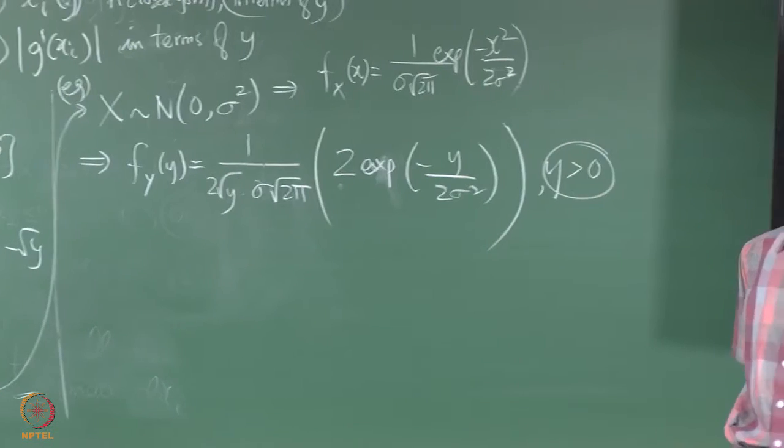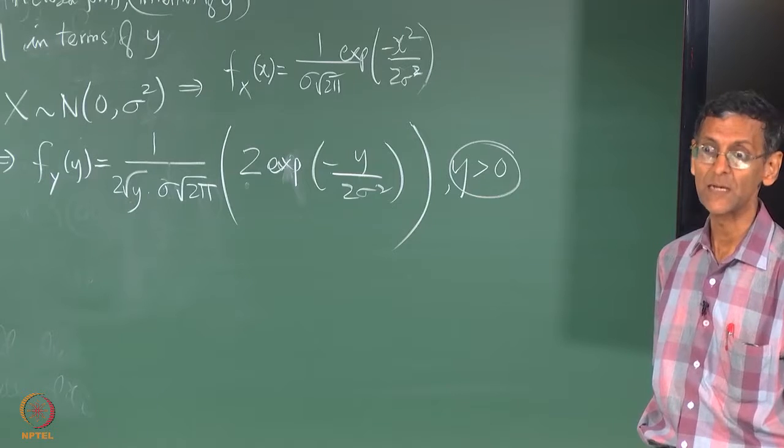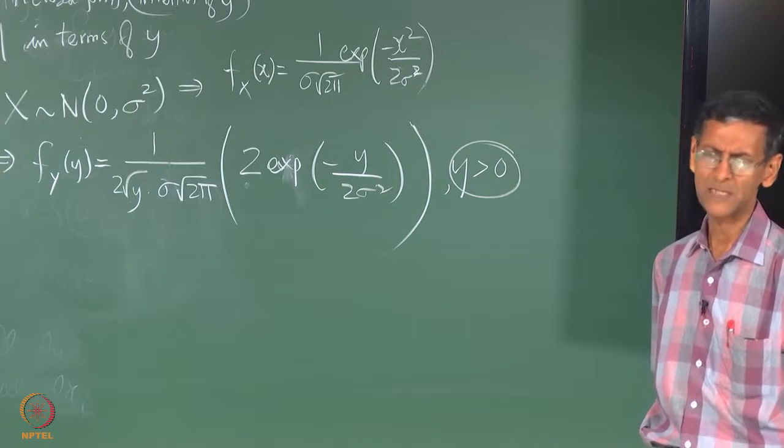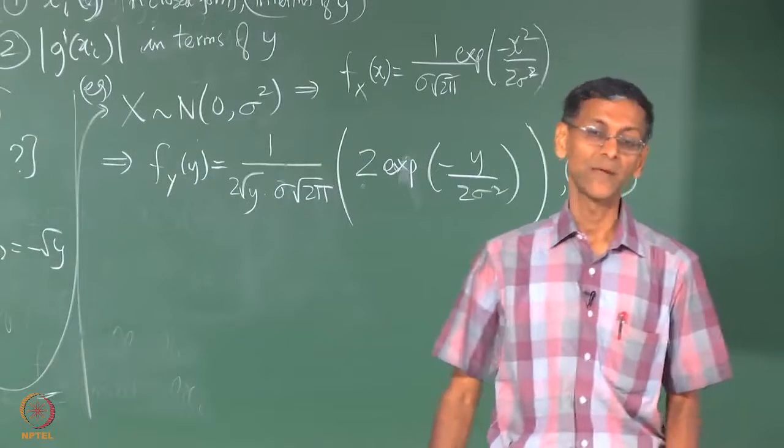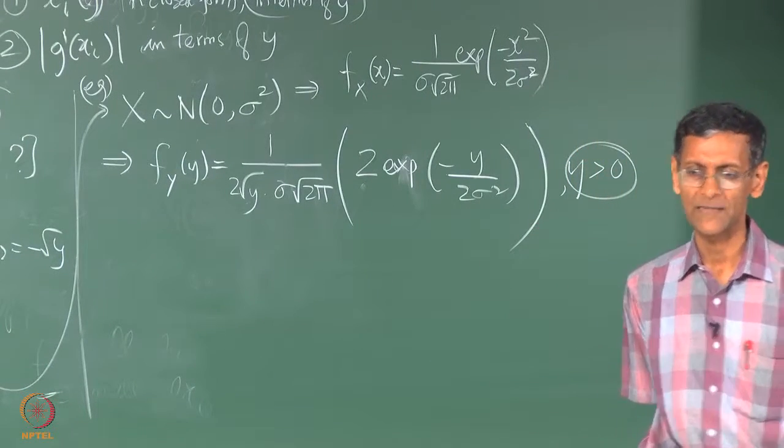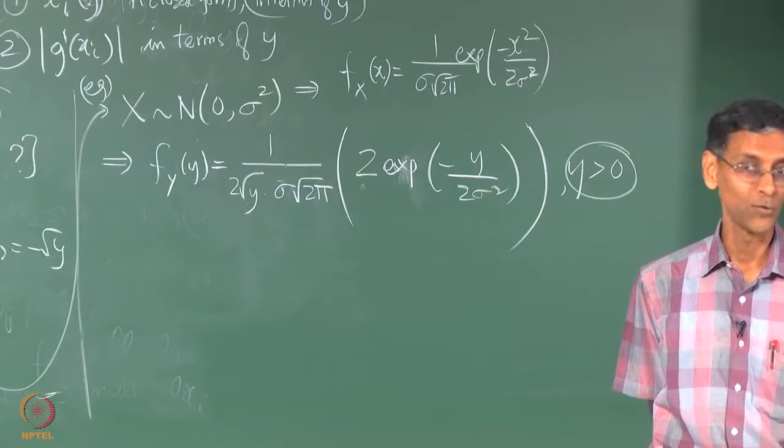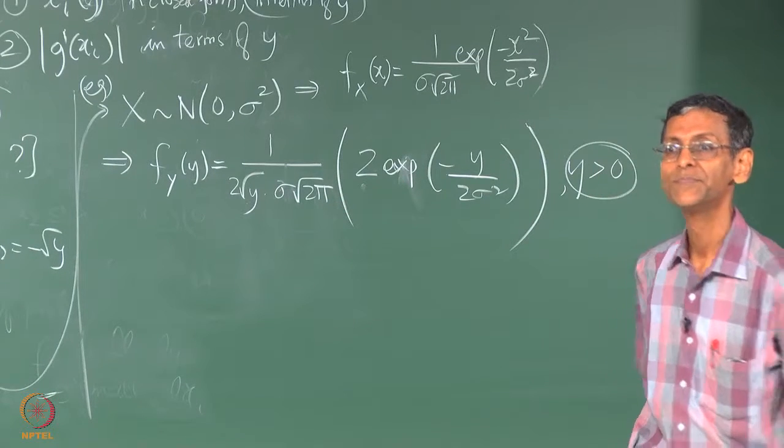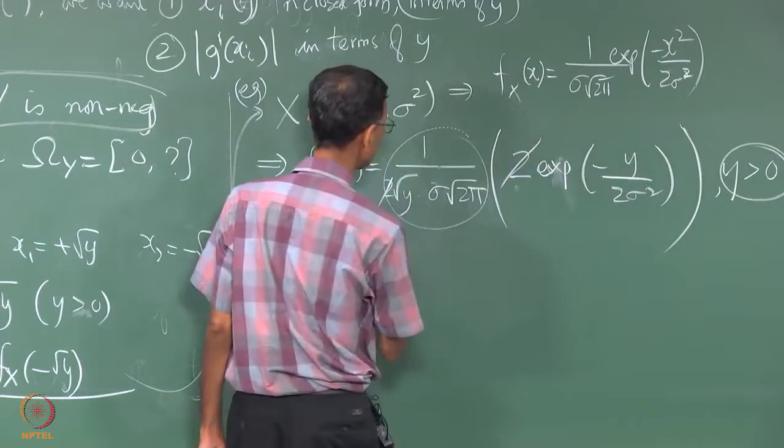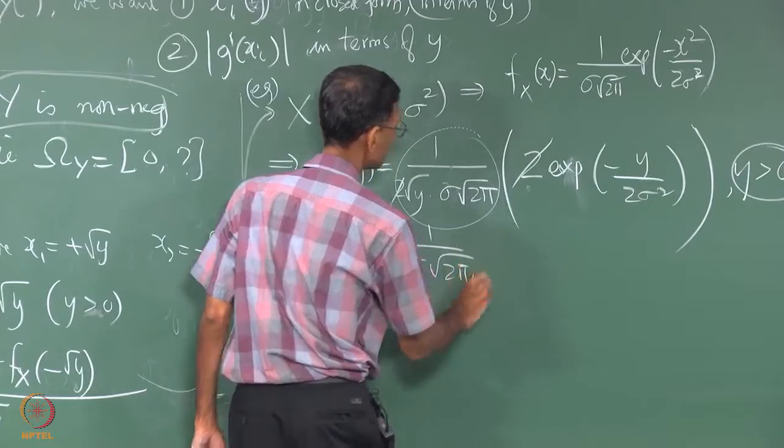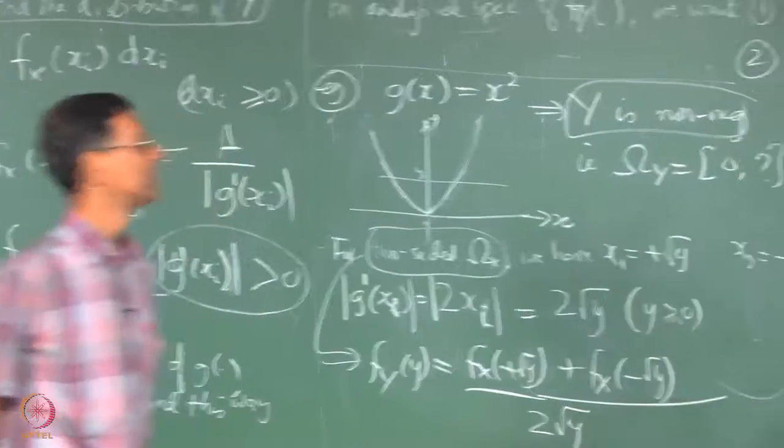Supposing I had a non-zero mean Gaussian that is there was a mean m, then you could no longer claim that those two would be the same and you get a much messier thing to worry about, much much messier. Because remember then you get an x minus m whole square and you have to worry about x square term, x term and all, it becomes a lot more complicated and this board is way too small to handle that. Or maybe I have to start over there and end over here, which I don't want to do.